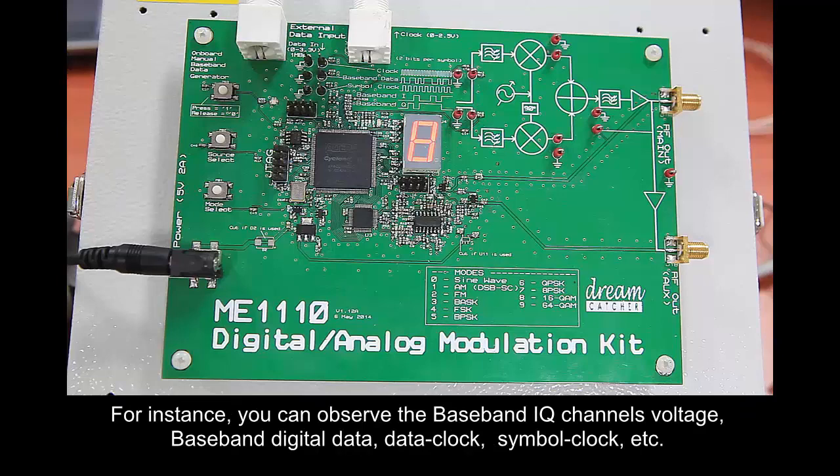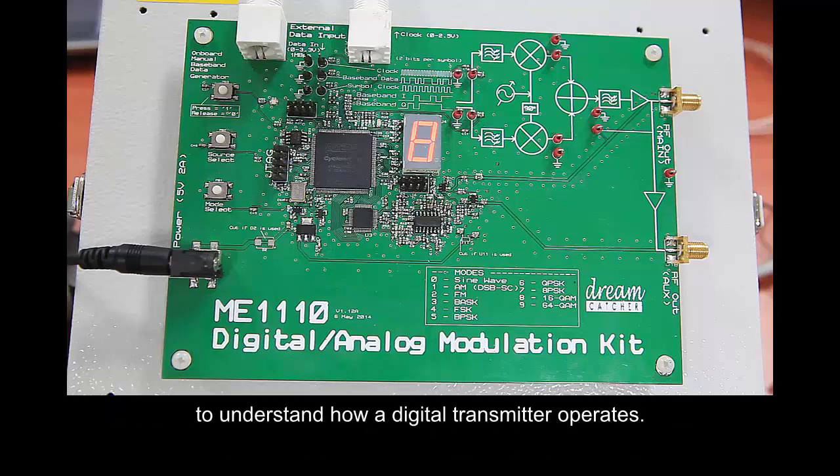For instance, you can observe the baseband IQ channels voltage, baseband digital data, data clock, symbol clock, and more to understand how a digital transmitter operates.